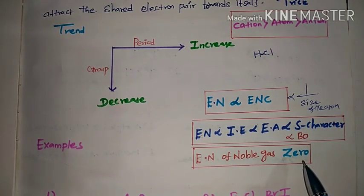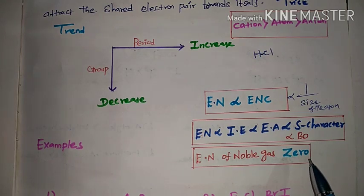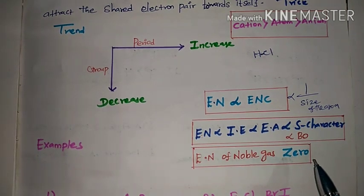Which element has the highest electronegativity in the periodic table? Fluorine is the highest electronegativity atom in the periodic table.